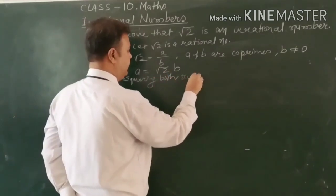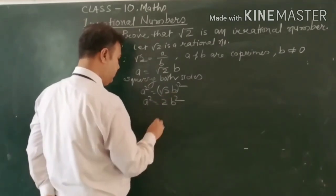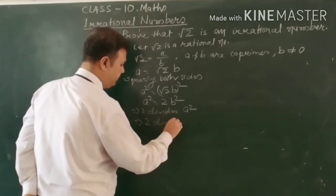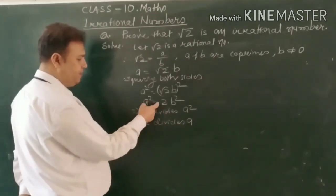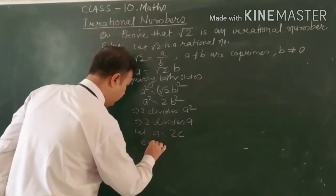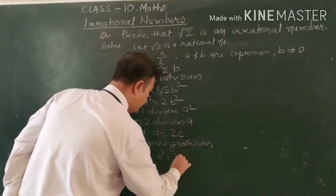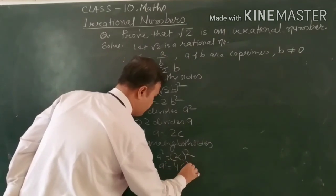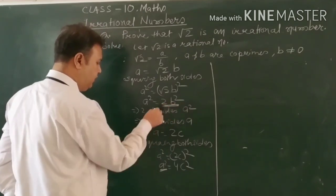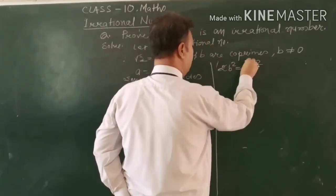Now squaring both sides: a squared equals 2 b squared. This implies 2 divides a squared, which implies 2 divides a. Let a equal to 2c. Again squaring both sides: a squared equals 4c squared. In place of a squared we can write 2b squared, so 2b squared equals 4c squared.